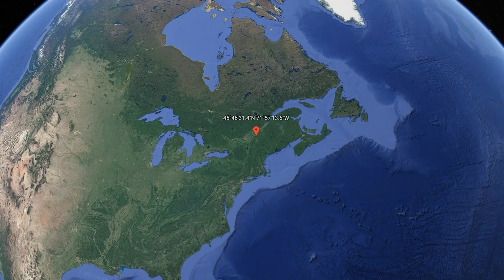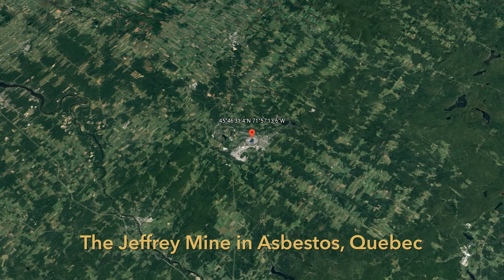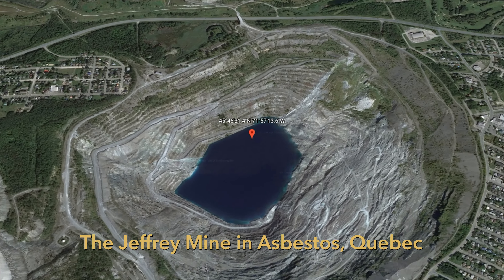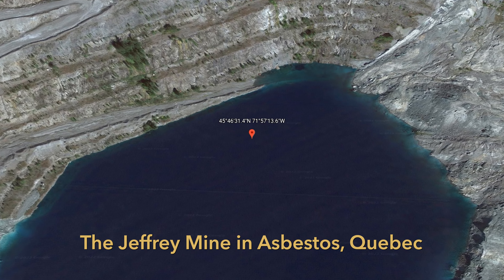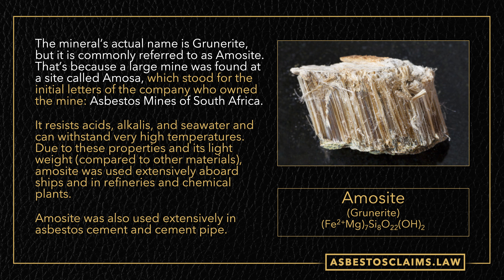I pulled this from Google Earth, and you can see this giant mine — that thing filled with blue water — was the Jeffrey mine. It was about 950 feet deep and about a mile across. Russia is still operating, right today as we're filming this, a huge mine that looks like the Jeffrey mine. Parts of Africa, in addition to giving us crocidolite and amosite, also had some chrysotile mines. Speaking of amosite, the actual name of this mineral is grunerite, but it's called amosite because the company that popularized it was the Asbestos Mines of South Africa — acronym AMOSA — so it became amosite.